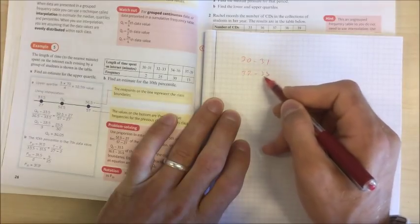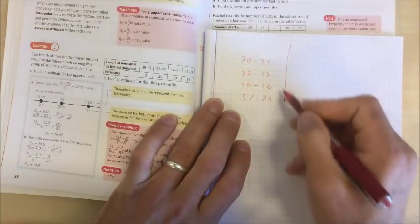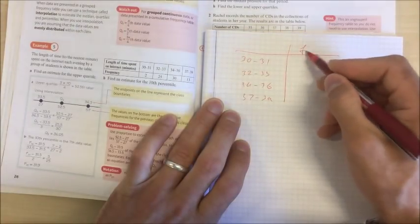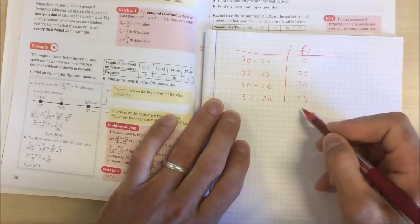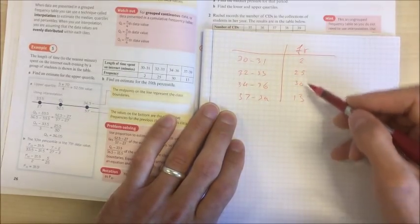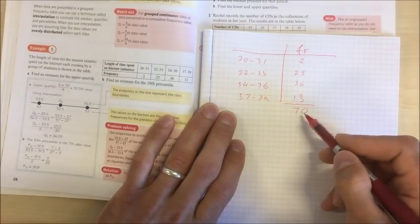We've got this frequency table: 30 to 31, 32 to 33, 34 to 36, 37 to 39, and in the frequency column we've got 2, 25, 30, and 13.